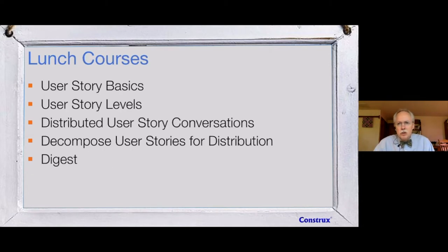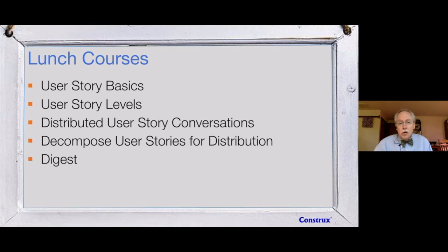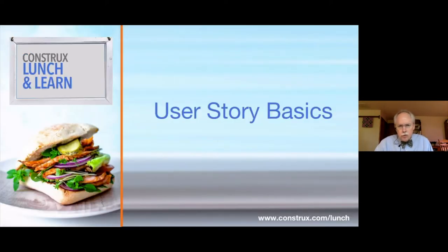Let's talk about today's agenda. We'll start with some user story basics, then level them up — noting that agile out of the box only gave us two levels: the epic level and the fit level. Then we'll look at how conversations work in a distributed way and how to decompose stories for a distributed team so they can queue up work. We'll finish with a summary and key points.